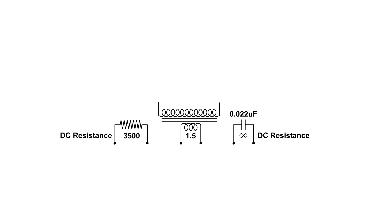I'm going to send an AC signal through each one of these components one at a time, starting with the resistor at the left — that 3500 ohm resistor — then through the coil in the center, whose DC resistance is only one and a half ohms, and then on the right through the .022 microfarad capacitor, whose DC resistance is infinite.